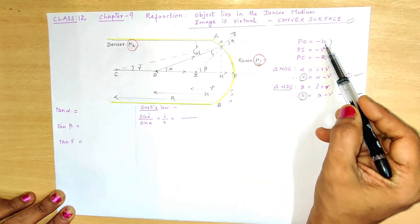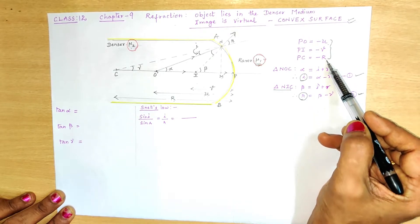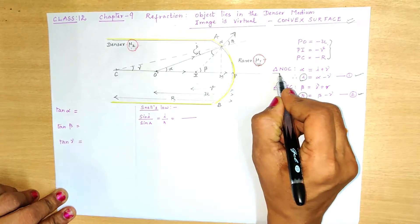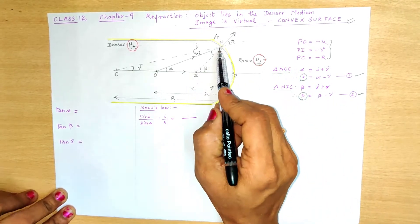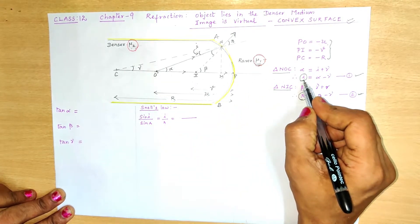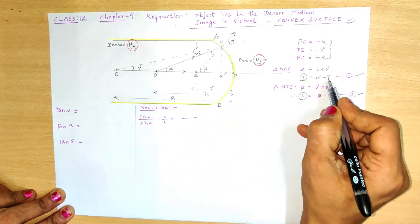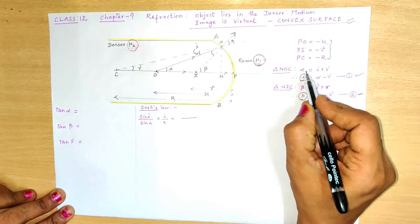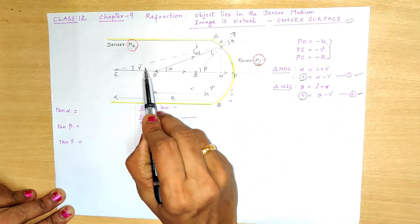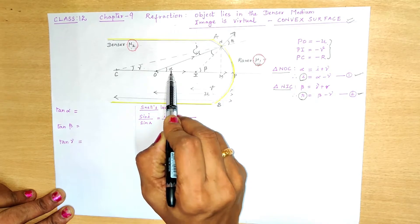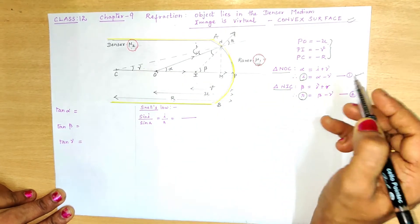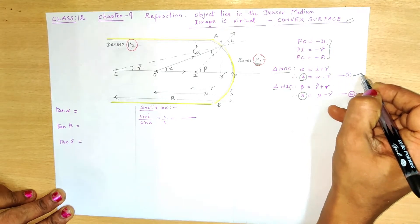So we have written minus U, minus V, minus R and kept these sign convention points ready. Now, looking at triangle N, O, C: the angle of incidence I is equal to alpha minus gamma, because alpha equals I plus gamma — alpha is the exterior angle. Therefore, I = alpha − gamma. This is equation number 1.